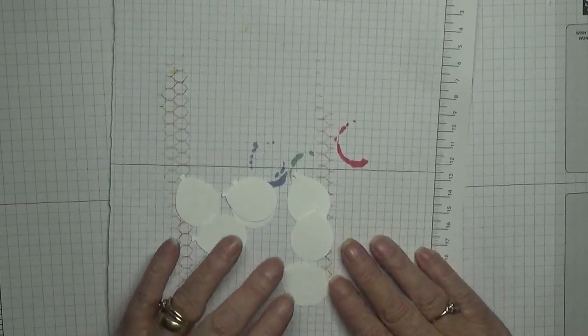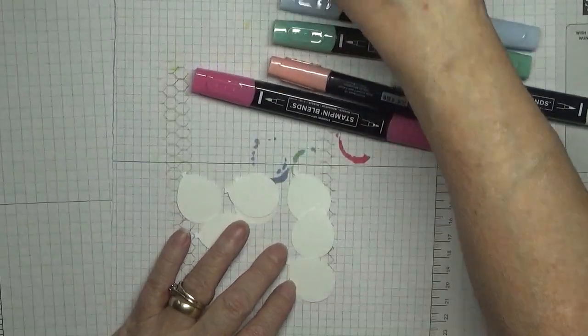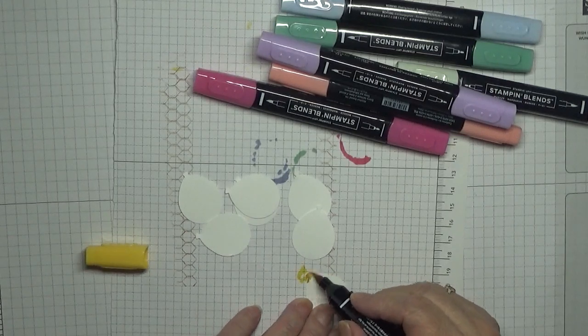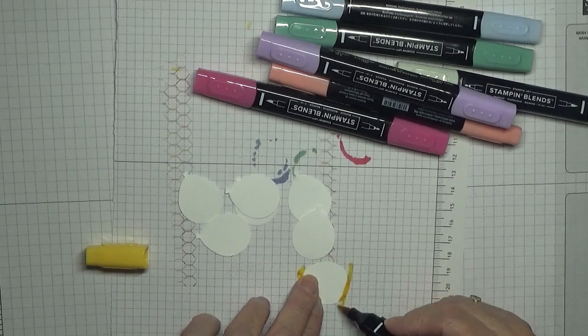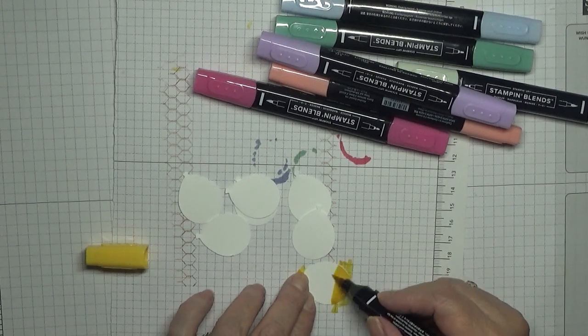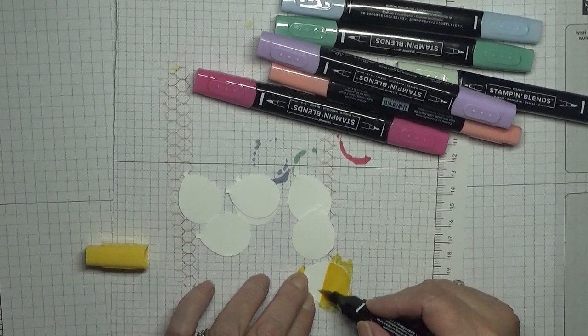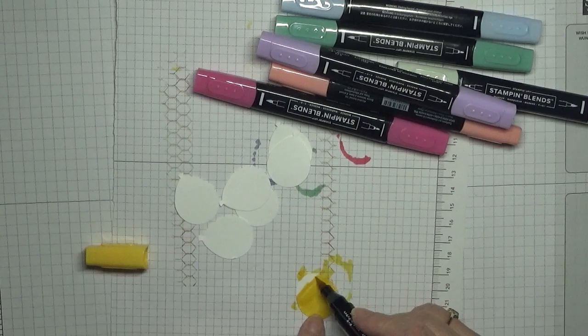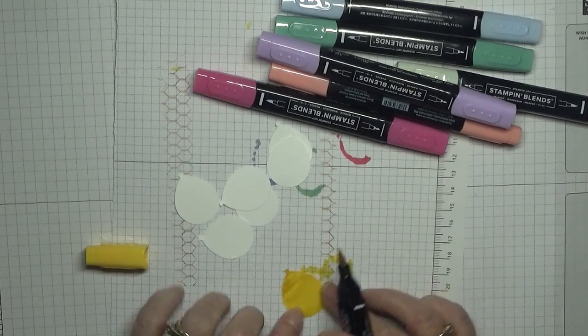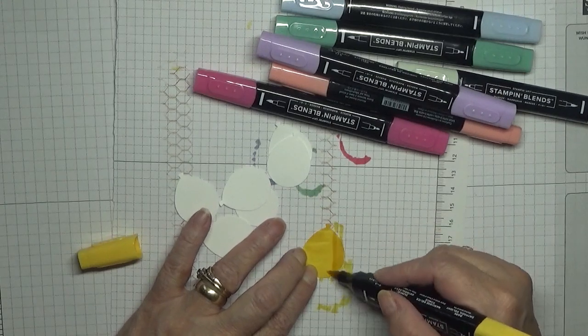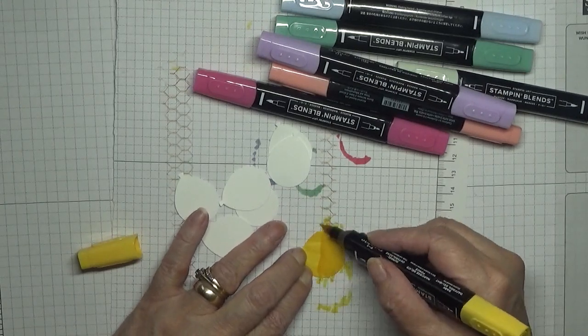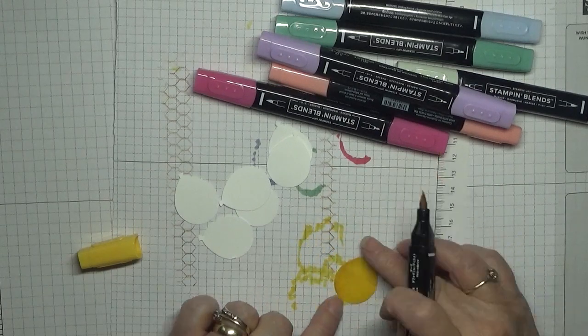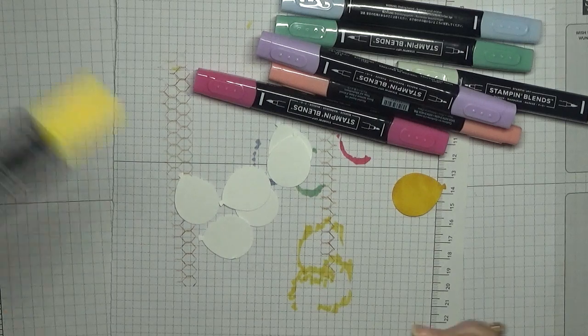All right, what we've got to do with these. One, two, three, four, five, six. I haven't, I've got seven. What we're going to do with these is just color them in. I'm just bringing this in just to protect my worktop and I've got seven color pens here. So this is Daffodil Delight dark. I am going over the edge because I want to get right to the edge to color in.